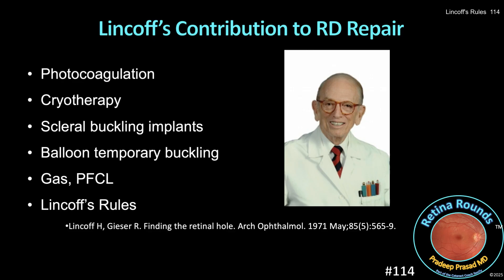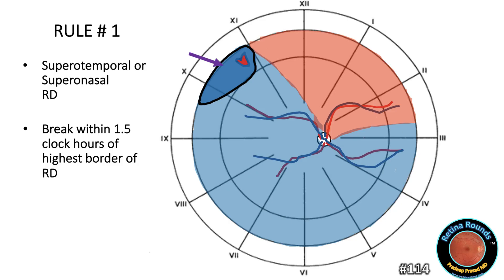Let's dive into Linkoff's Rules, and we'll discuss some other tips for identifying retinal breaks at the end of the episode. Rule number one: for supra-temporal or supra-nasal retinal detachments, the break is almost always within one and a half clock hours of the highest border of the retinal detachment. In this diagram of a supra-temporal retinal detachment in the right eye, the high water mark is roughly at the 11 o'clock position, so the break is most likely between the 9:30 and 11 o'clock positions.